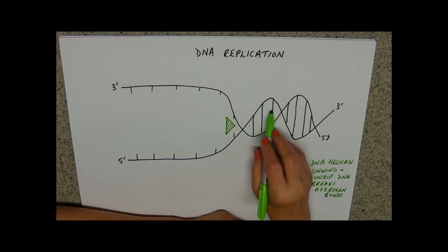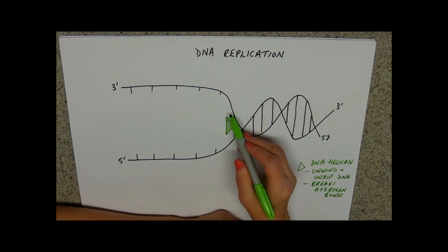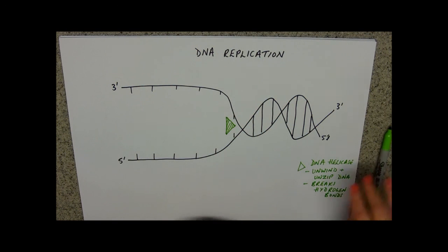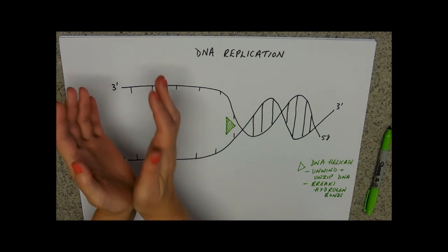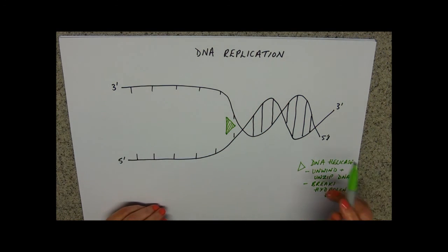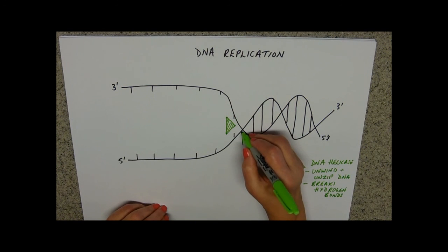These are our unbroken hydrogen bonds intact molecule and this is where the hydrogen bonds are breaking. This bit looks like a fork in the road and so we call this bit here the replication fork.